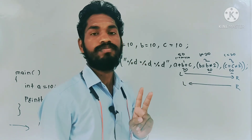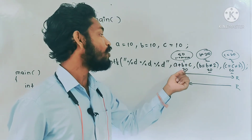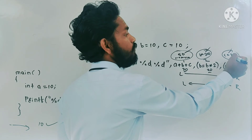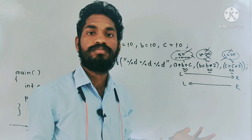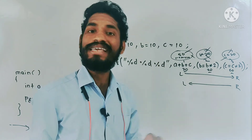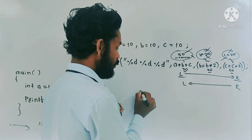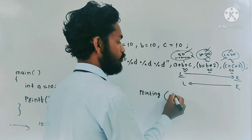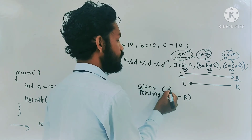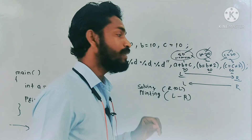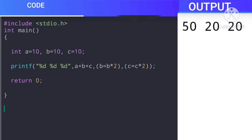The third point is: after solving the expressions, whether printf prints the data from left to right or right to left. Please keep in mind: while printing the data, printf follows left to right. So while solving expressions, printf follows right to left, but while printing the data, printf follows left to right — it will print 50 first, then 20, then 20.